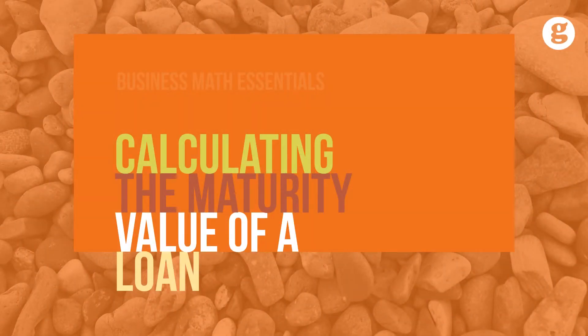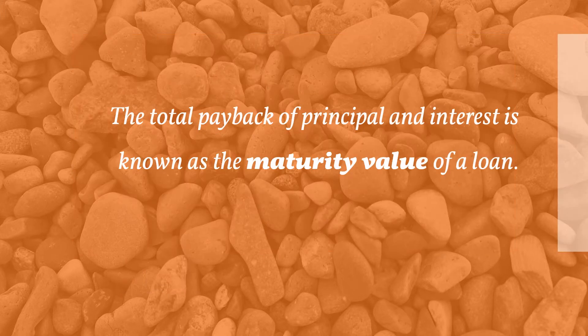When the time period of a loan is over, the loan is said to mature. At that time, the borrower repays the original principal plus the interest. The total payback of principal and interest is known as the maturity value of the loan.